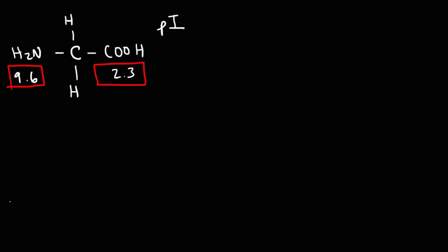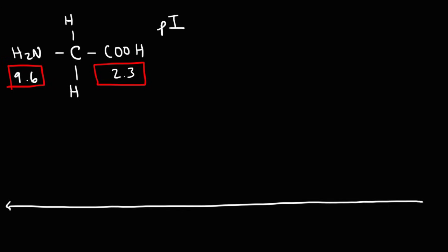The first thing we're going to do is create a number line, and we're going to put the pKa values on this number line. Our next step is to draw the dominant forms of the amino acid in each of the three sections of the number line.